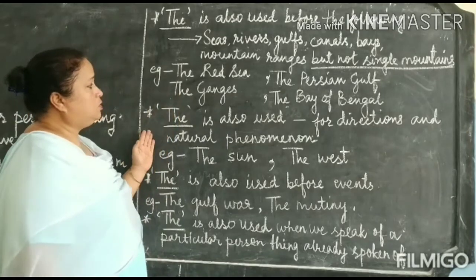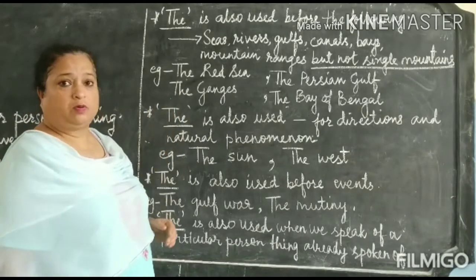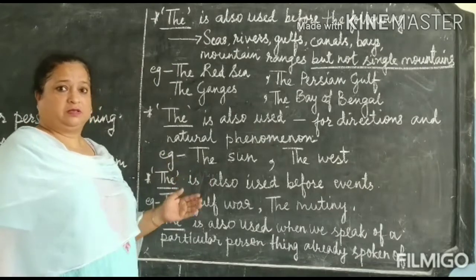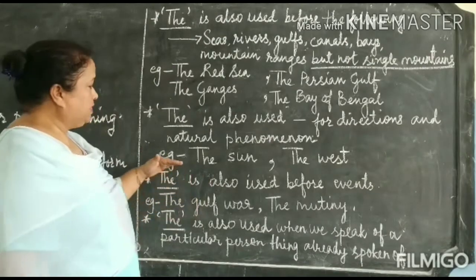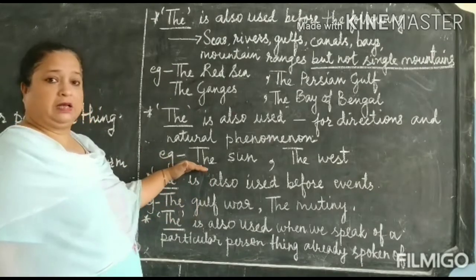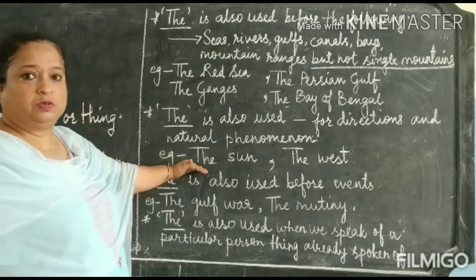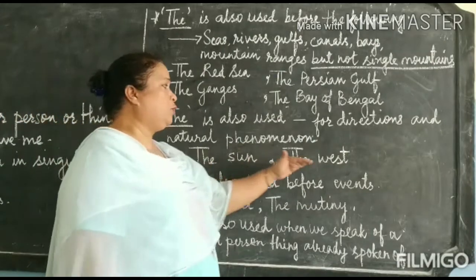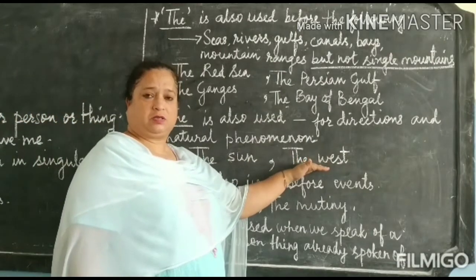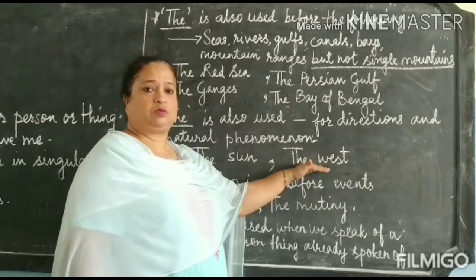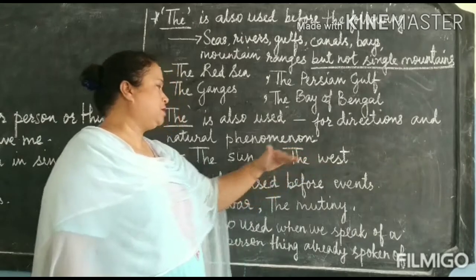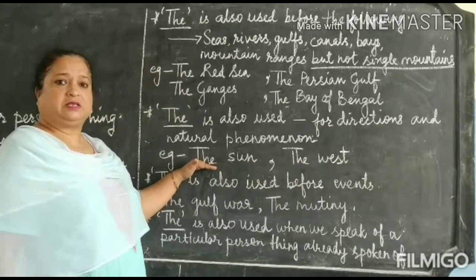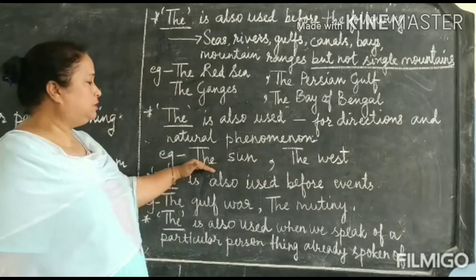'The' is also used when we talk about natural phenomena and directions. For example: the sun, the stars, the moon, the sky. And when we talk about different directions — north, south, east, west — what do we use? We use the definite article 'the'.